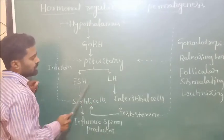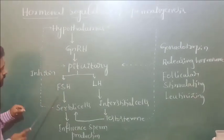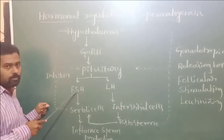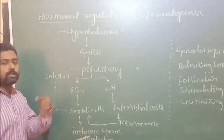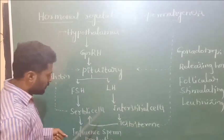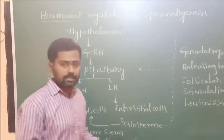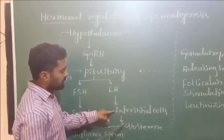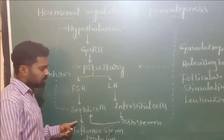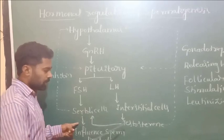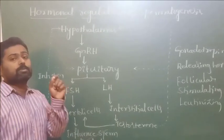The hypothalamus secretes gonadotropin releasing hormone, which stimulates the anterior pituitary gland or adenohypophysis. The adenohypophysis secretes the two gonadotropins: follicular stimulating hormone and luteinizing hormone. FSH moves in the bloodstream, stimulates the Sertoli cells, and the Sertoli cells influence the germinal epithelial cells to divide and produce sperms. LH acts on the interstitial or Leydig cells, which produce testosterone. When the level of testosterone is at maximum, spermatogenesis will be at its maximum extent.